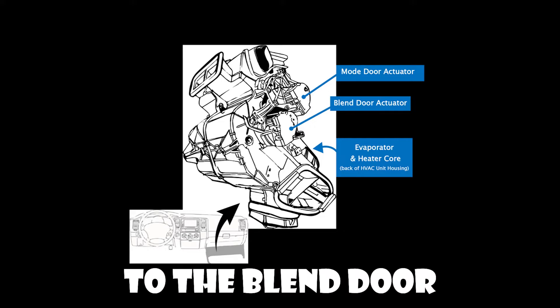Number three: inability to switch between heat and AC. A blend door actuator that's not working correctly may prevent you from switching between heating and air conditioning. If the blend door is stuck in one position due to a faulty actuator, the HVAC system won't be able to alternate between heating and cooling. For example, if the blend door is stuck on the heat side, you'll only get hot air, even if the air conditioning is turned on.